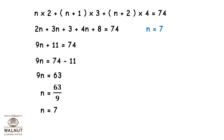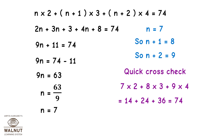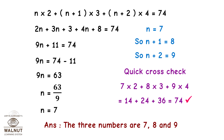Now n equals 7, so n plus 1 equals 8, and n plus 2 equals 9. Let's quickly cross check: 7 into 2 plus 8 into 3 plus 9 into 4 equals 14 plus 24 plus 36 which equals 74. Therefore the three numbers are 7, 8, and 9.